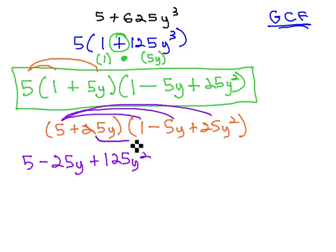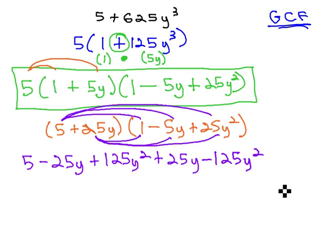The 25y multiplying through gives us plus 25y. 25y times negative 5y is negative 125y squared, and 25y times 25y is positive 625y cubed.